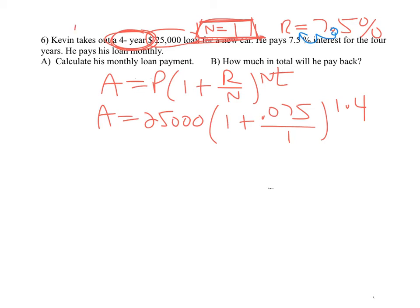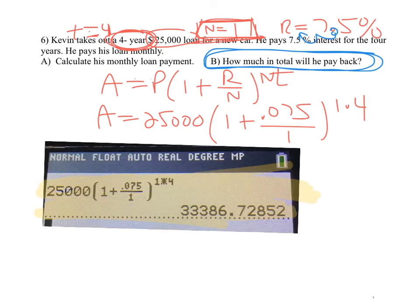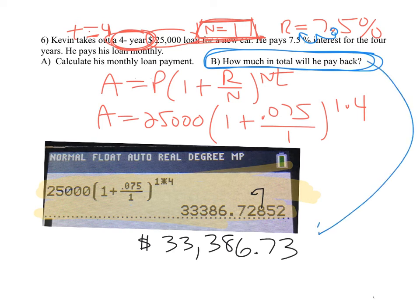T is always the time in years, and here the loan is for four years. Let's evaluate this on our calculator — make sure you're including your calculator photos in the assignment. This will answer part B: how much in total Kevin is going to be paying back. Kevin is paying back $33,386, and the 8 kicks the 72 cents up to 73 cents. So the answer to part B is $33,386.73 — that's how much in total he's paying back for this $25,000 loan.